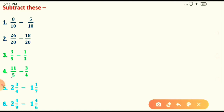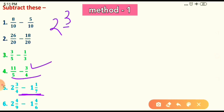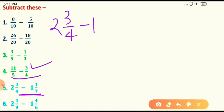Here is one more question for your practice — if you solve it, write the answer in the comment section and I will definitely check. Now come to the third type: subtraction of mixed fraction numbers. Like addition, we will solve this in two methods. The question is 2 whole 3 upon 4 minus 1 whole 1 upon 7.